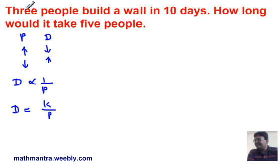Now, let's use the first condition given here, 3 people and 10 days, and substitute it in this equation. So, I have 10 equals K over 3, which means K equals 10 times 3, or K equals 30.